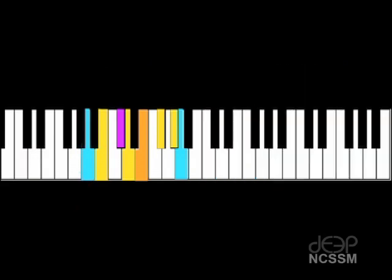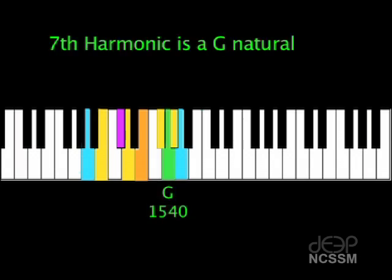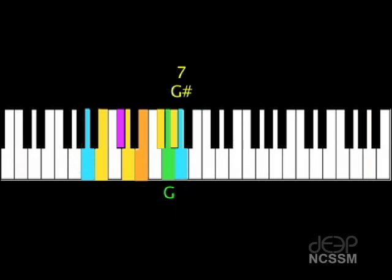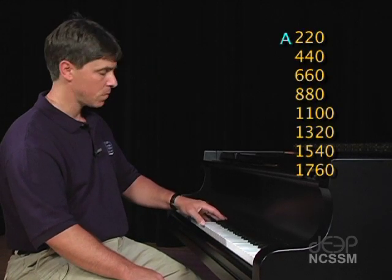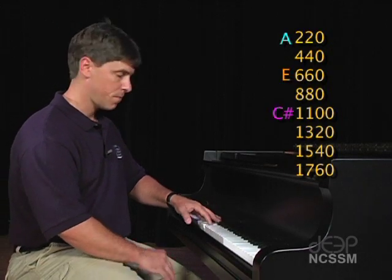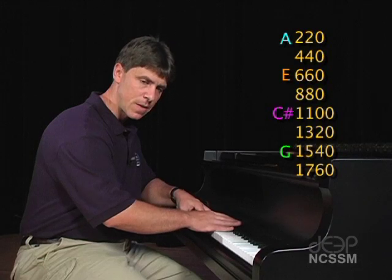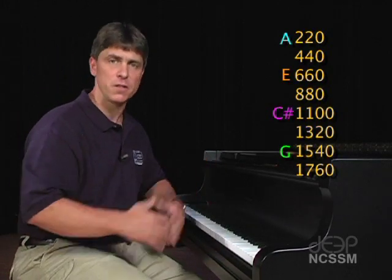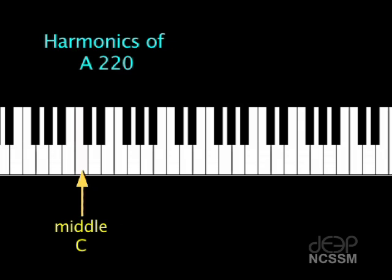Finally, the seventh harmonic is a G natural. Now, this may not seem to fit into the pattern of the A major scale. A major has a G sharp — G sharp is the 7th note of the scale. And while it would take more time than we have today to fully explain the presence of a G natural in this series, I would like you to hear what it sounds like within the chord: A, C sharp, E, G natural. The G natural makes the chord dominant. A dominant chord feels like it should be moving on to another chord. Now, let's listen to the fundamental and each of the harmonics in order.